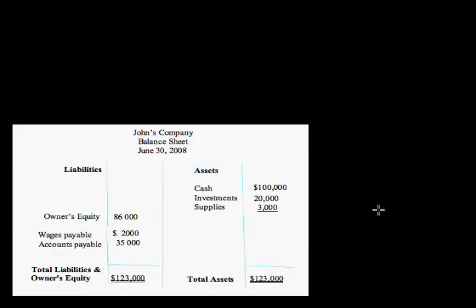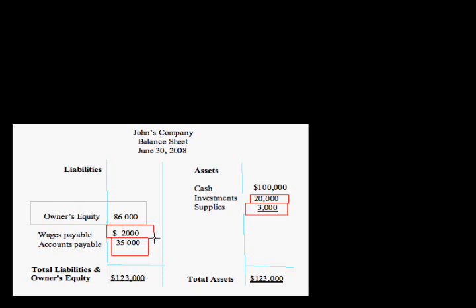Let us take a simple example of a balance sheet. Suppose John is a small businessman and he invested his own money in his business — it is six thousand dollars. He may have purchased investments of twenty thousand dollars and also purchased goods.